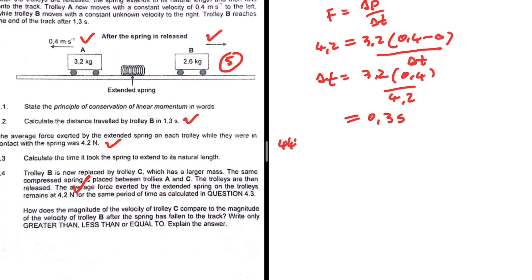So it will be less than. Less than. Why am I saying less than? Let me know in the comments: why is the velocity, the magnitude of velocity, of the trolley C with the larger mass gonna be less than that of B? I'm interested in your answer for this question. Let me know in the comments. Apart from that, which video you want me to do next? Here we go.